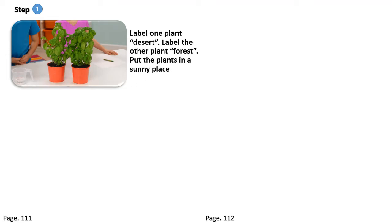Now let's move on to pages 111 and 112 in our science book, where we are going to talk about a nice experiment which you can also try at home. For this experiment, we have two children, and in front of them we have two plants called basils. For step 1, these children are going to label one plant 'desert' and label the other plant 'forest.'